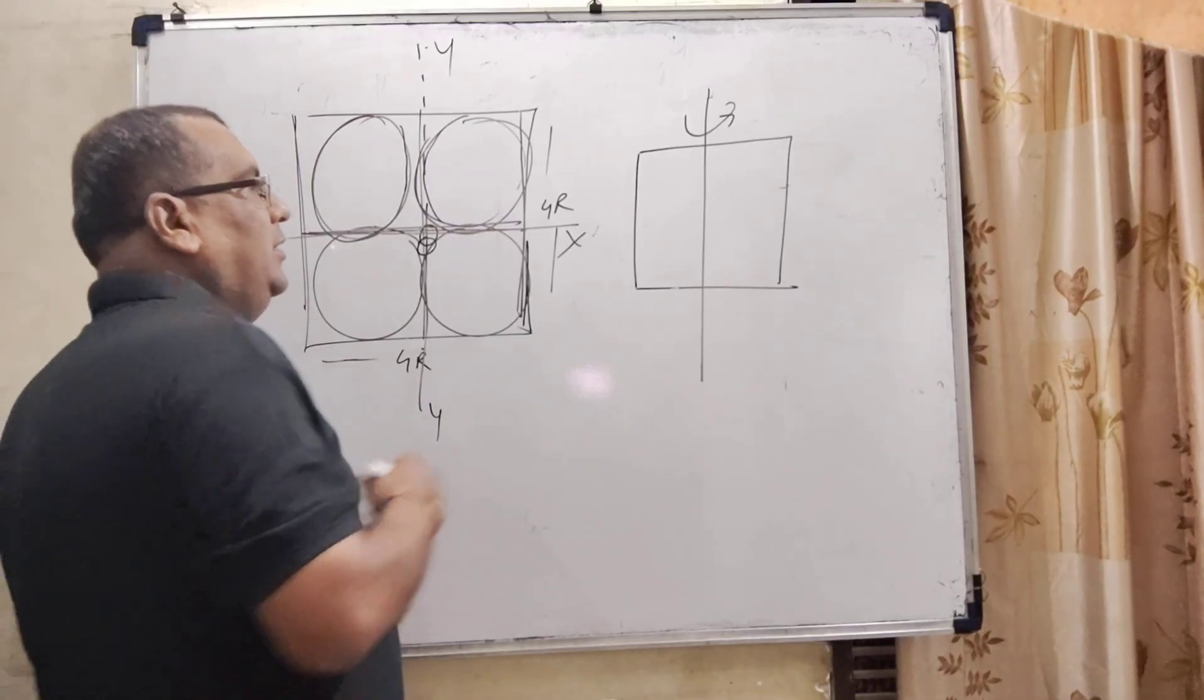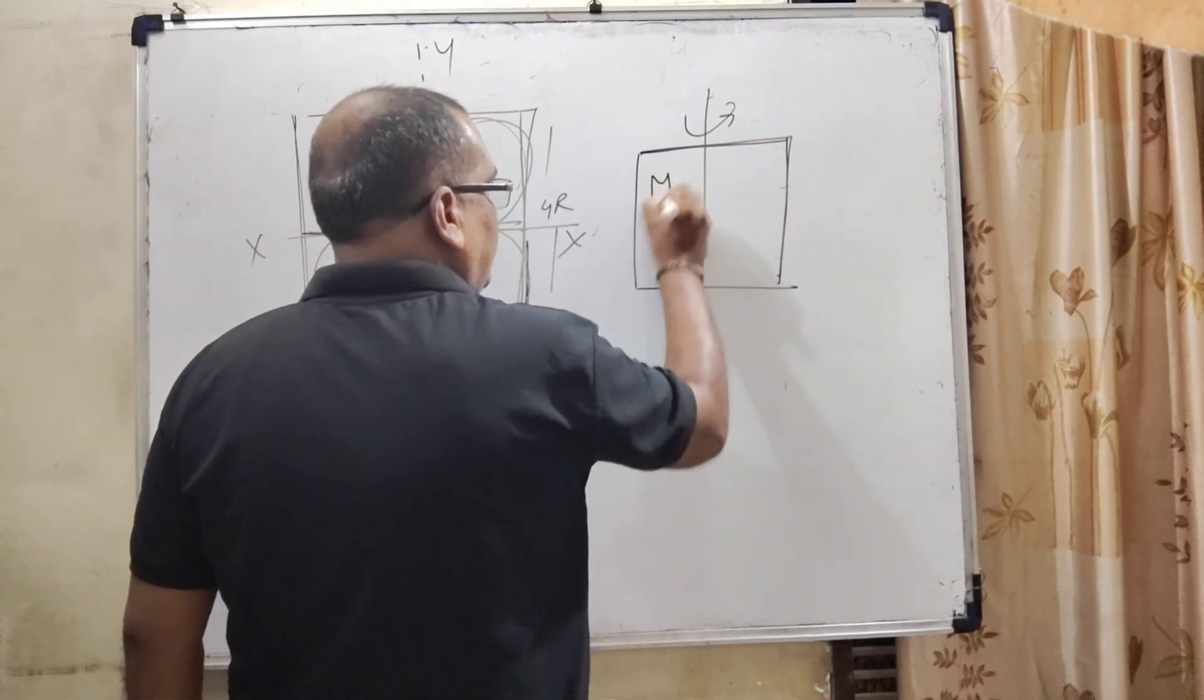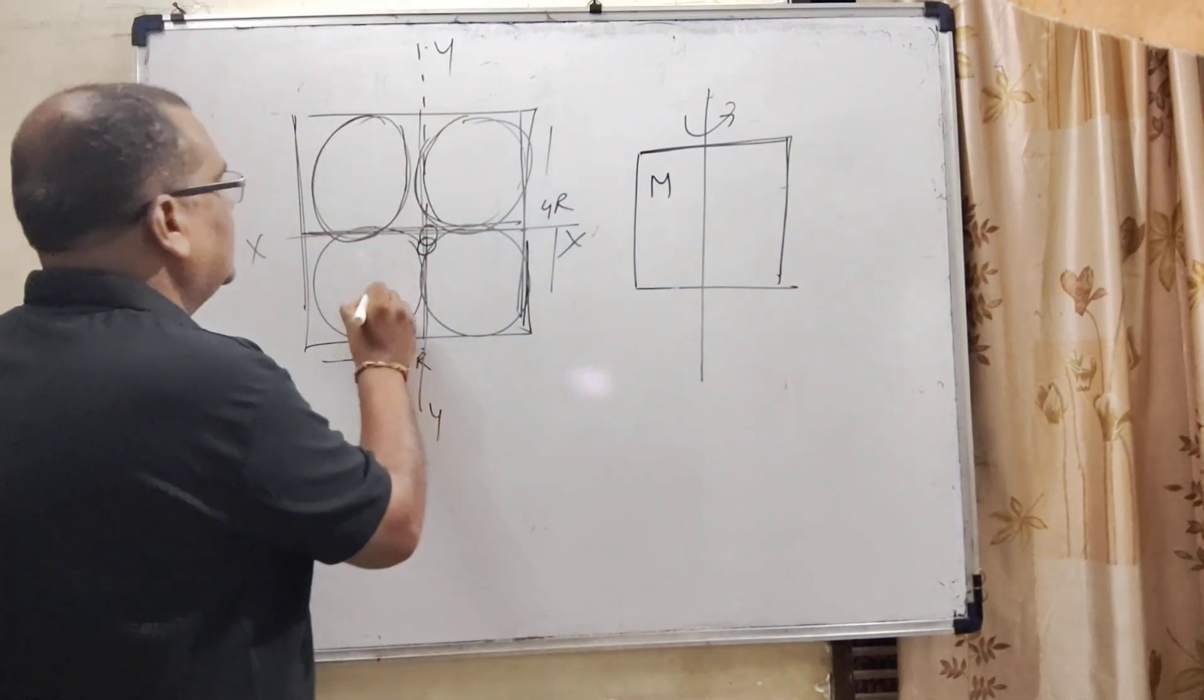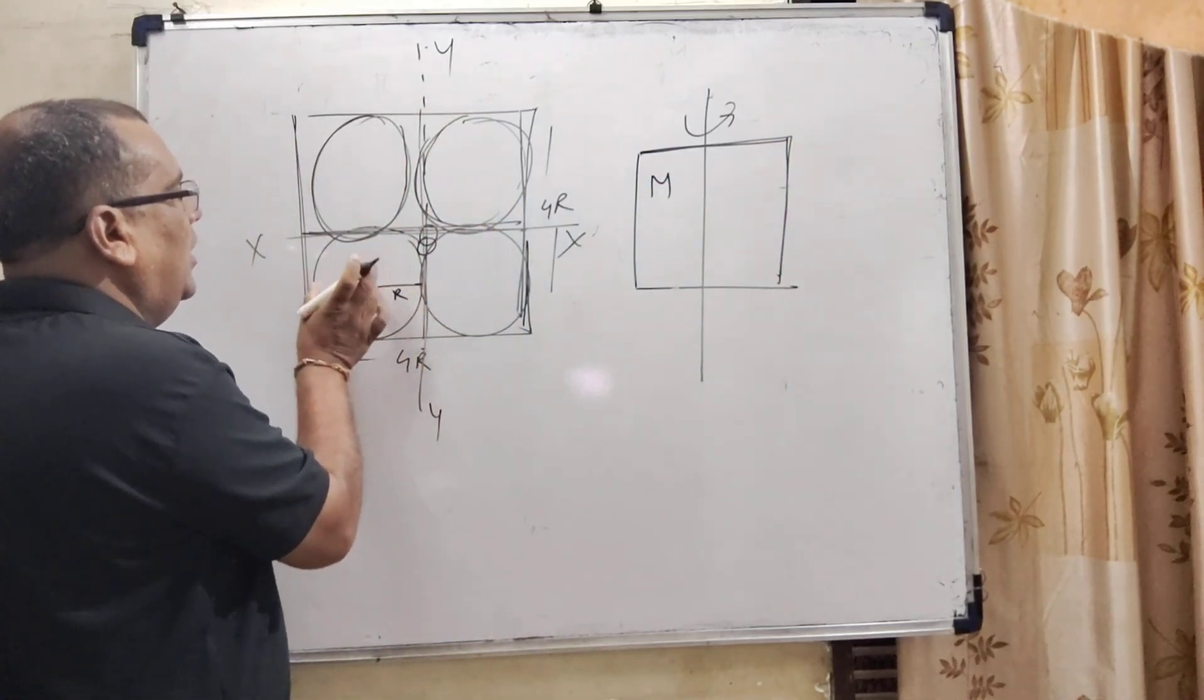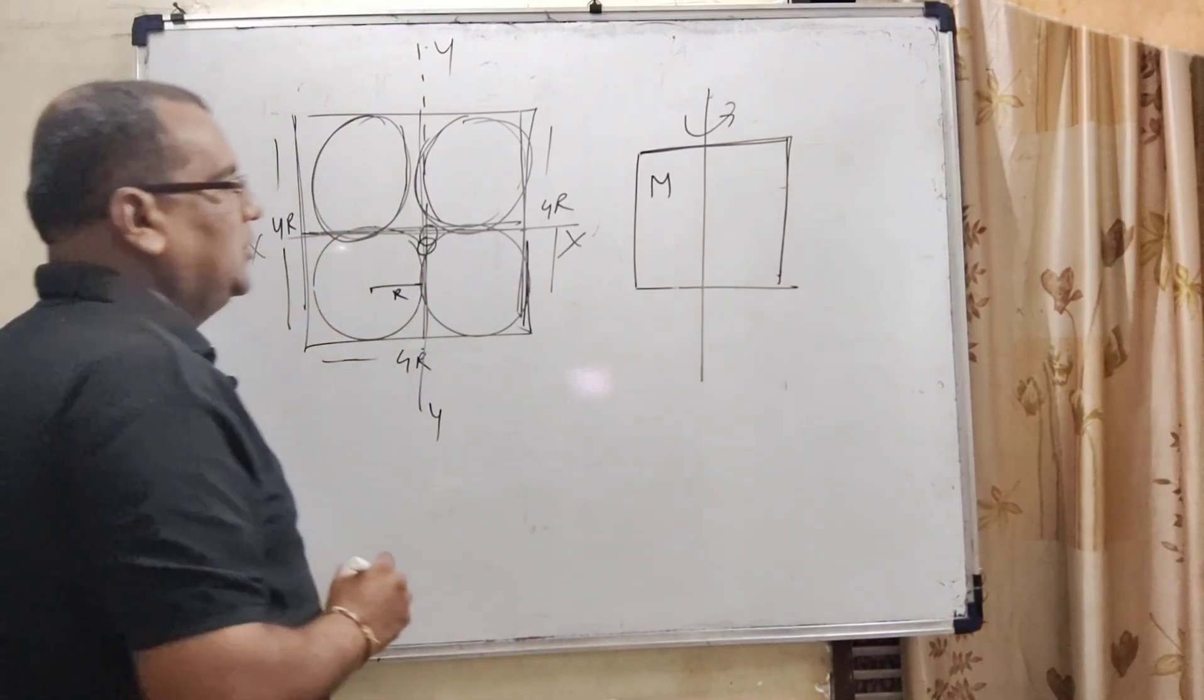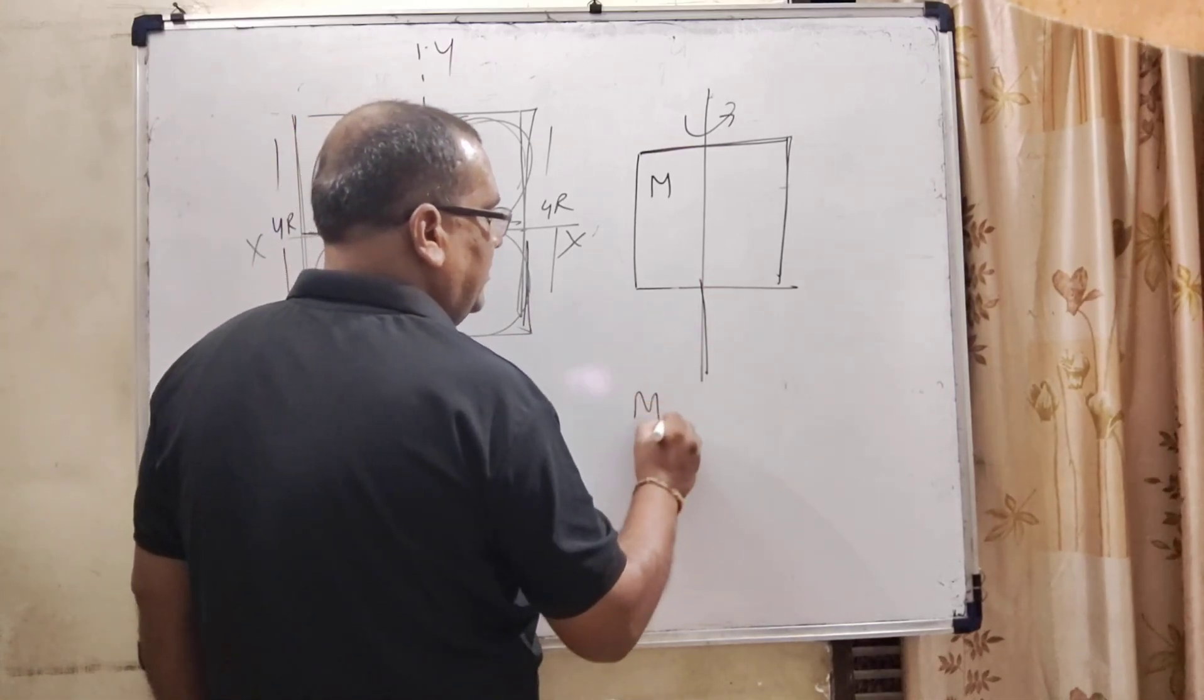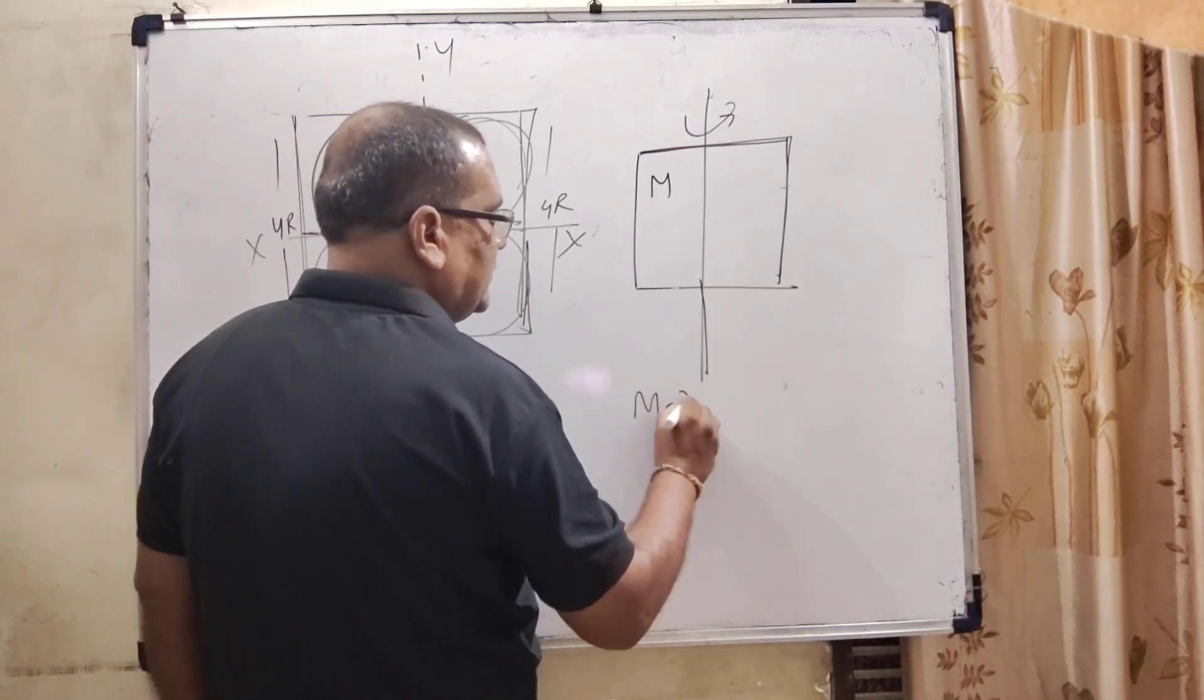Now, firstly, the mass of this square plate is capital M. The distance is 2R, 2R, that is 4R. Length and breadth are the same. The moment of inertia for this square plate is M times side square, means A square by 12.